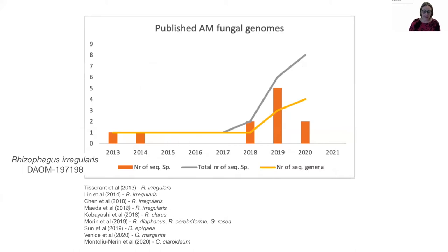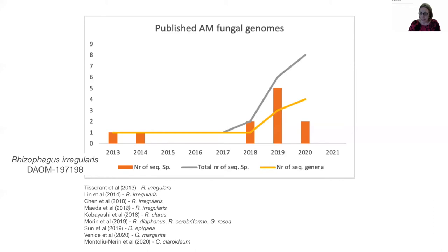Figuring out this polymorphism was really hard before we had genome data. It was only in 2013 that the first genome of an AM fungus was published — Rhizophagus irregularis, the model fungus used for a lot of experiments as well as genome work. This figure illustrates the papers published on AM fungal genomes: a grey line showing the number of species sequenced and a yellow line showing the number of genera represented. We really learned a lot from these genomes.